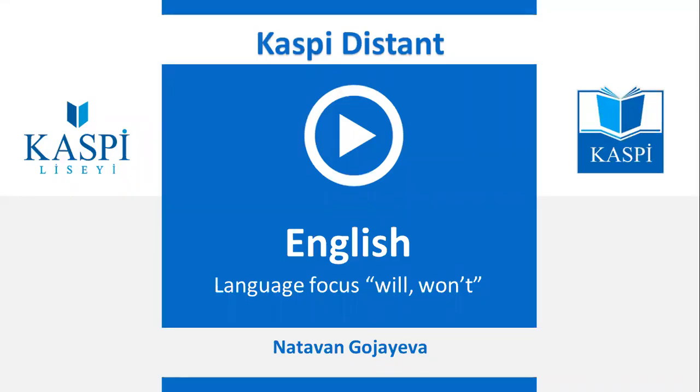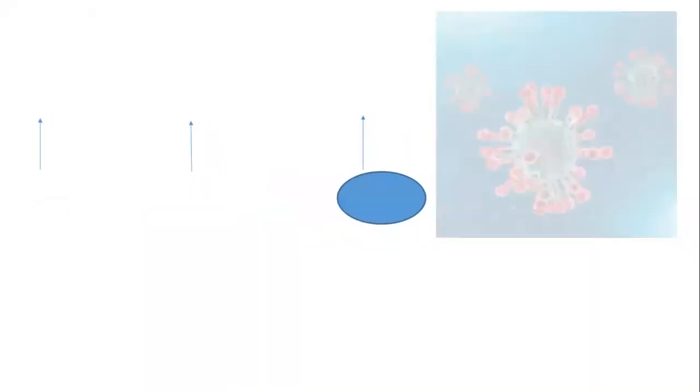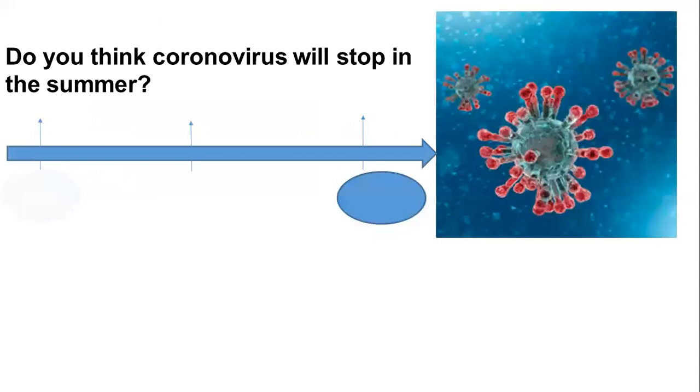Hello, dear learners. In this video, I will explain how to use will and won't to predict the future. In the picture, you can see a timeline describing past, now, and future. Let's read the sentence: Do you think coronavirus will stop in the summer? The sentence conveys the meaning of predicting the future.